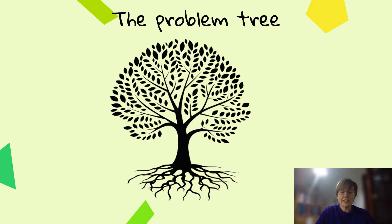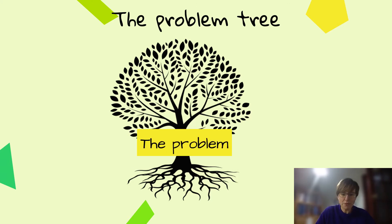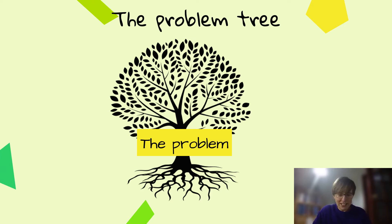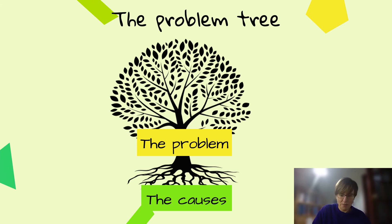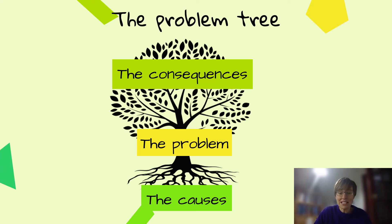The main exercise in this section is called the Problem Tree. The Problem Tree is a way to dissect problems, really understand their root causes and consequences. Each team will have a worksheet that looks like a tree. On the trunk they will write the problem they are focused on. The causes of the problem become the roots, and the consequences — the things we can often see — become the branches of the tree.